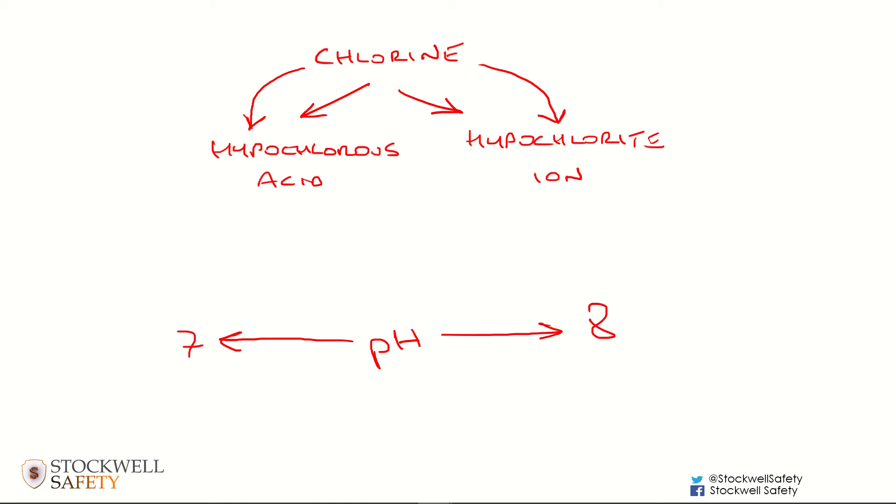You want the pH to be on the lower side. If you're talking between 7 and 8, you'd want it more towards 7 than towards 8, because when you're testing for chlorine with your DPD1 tablet to get your free chlorine level, it doesn't tell you how much is turning into the useful hypochlorous acid.